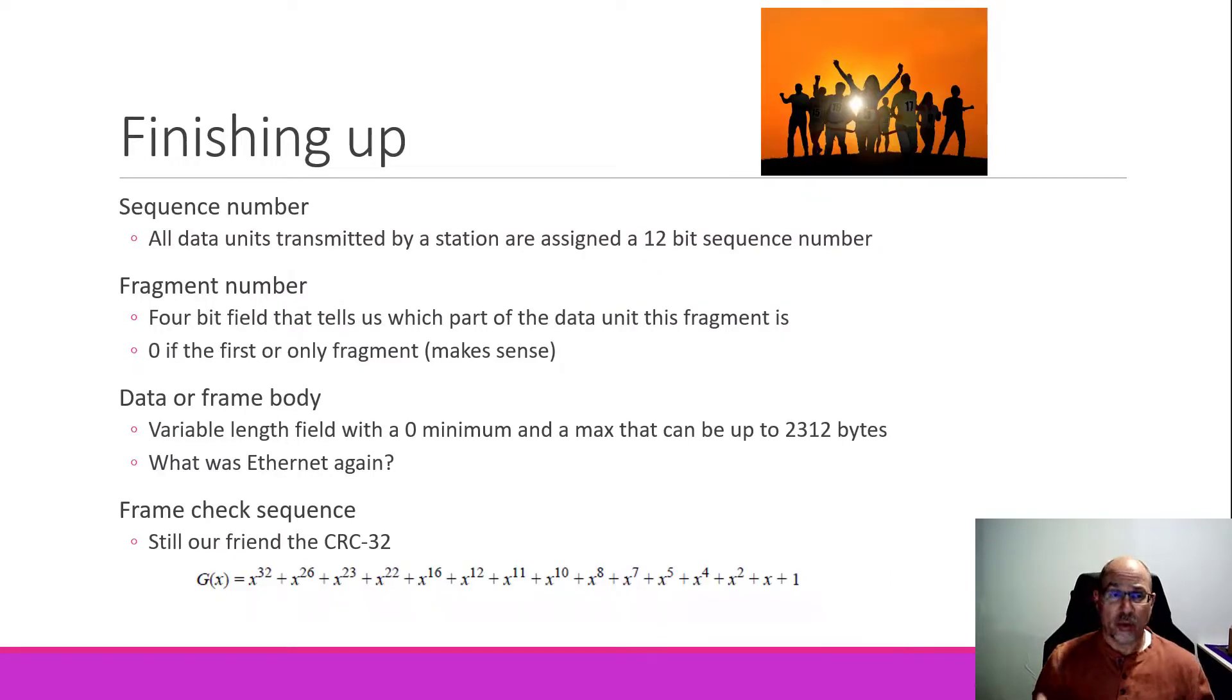To finish up our control fields, we have the sequence number and fragmentation number, or fragment number, they go together. Every single data unit, which we mentioned earlier, has a sequence number that's assigned to it. All of the fragments that might be part of the same data unit would have the same sequence number. However, where you are in that collection of fragments is indicated by the fragmentation number, which is the other four bits of this two-byte field. If you're the first fragment, or there are no extra fragments, meaning that all the data fits inside your frame, then that value will be zero.